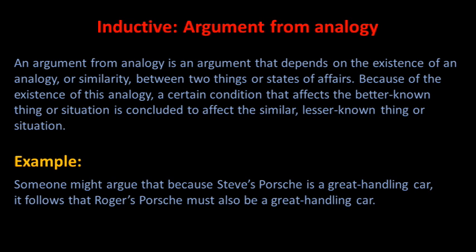An argument from analogy is an argument that depends on the existence of an analogy or similarity between two things or states of affairs. Because of this analogy, a certain condition that affects the better known thing or situation is concluded to affect the similar, lesser known thing or situation. For example, someone might argue that because Steve's Porsche is a great handling car, it follows that Roger's Porsche must also be a great handling car. The certitude attending such an inference is probabilistic at best.